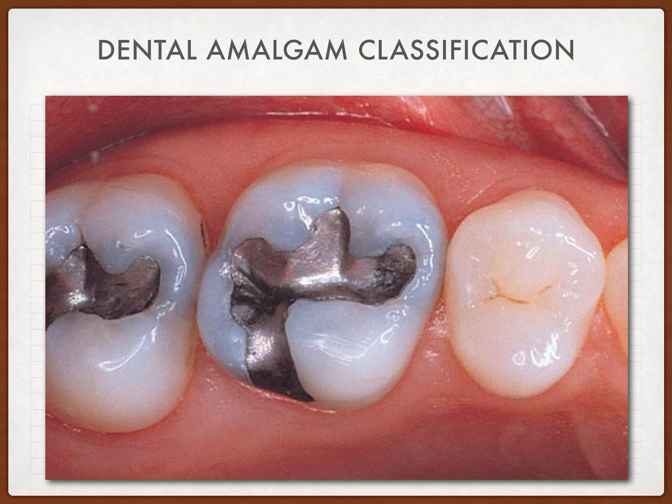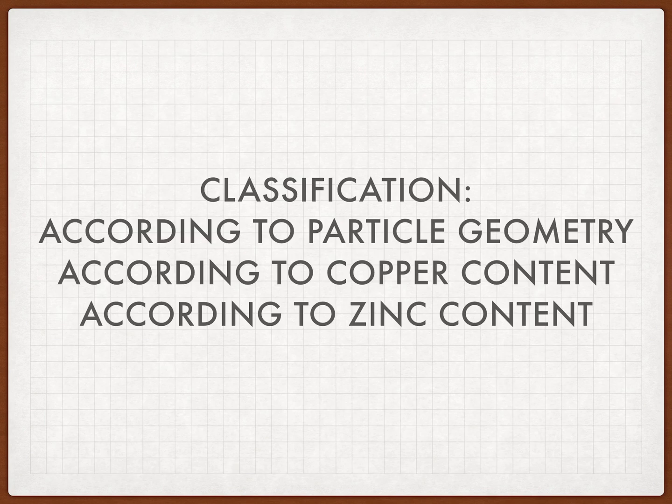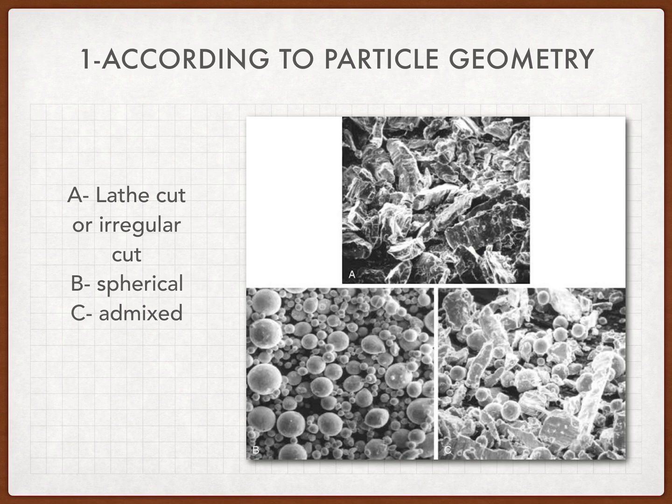Dental amalgam classification depends on three standards: according to the particle geometry — and when I say particle I mean the silver alloy particle geometry — according to the copper content, and according to the zinc content. These are the three standards by which I will classify amalgam. The first classification is according to the particle geometry, and we have three geometries.